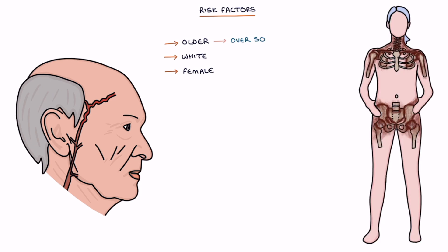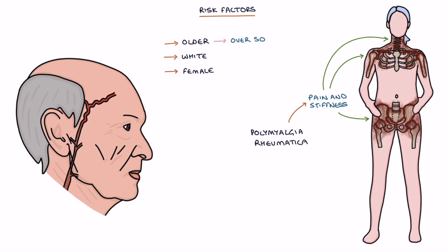There's a strong relationship with polymyalgia rheumatica, which is an inflammatory condition that causes pain and stiffness in the shoulders, pelvis, and neck. You can find a link to the Zero to Finals video on polymyalgia rheumatica in the video description.